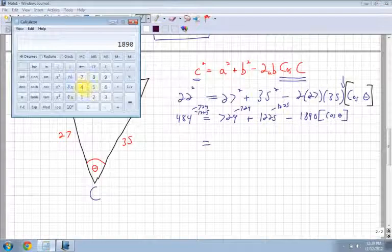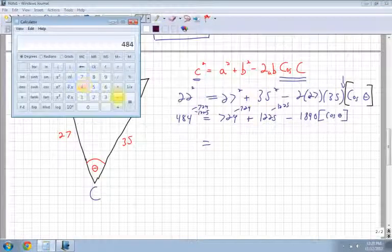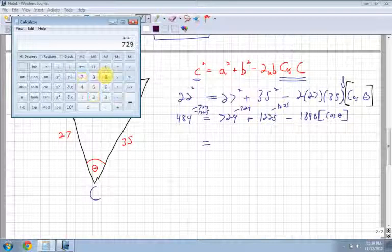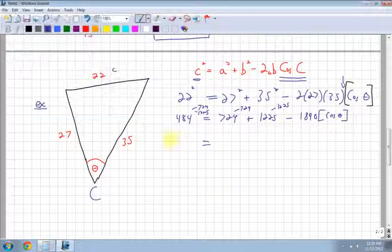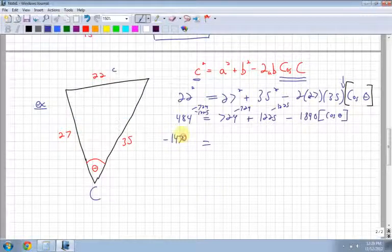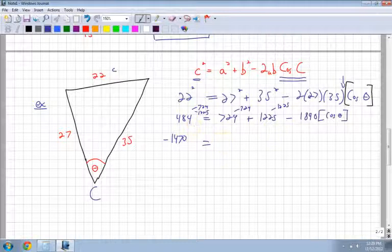So what do I have here? 484 minus 729 minus 1225, so I'm left with negative 1470. Notice I have no decimals which is nice and this is equal to negative 1890 times the cos of theta. Again you don't have to put these brackets I'm just showing them to show that it's a multiplication.